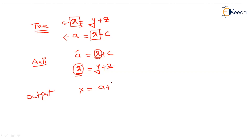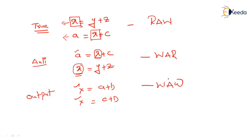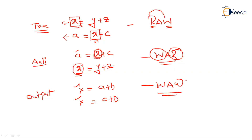For output dependence, consider: X = A + B followed by X = C + D. Both instructions write to X. For RAW, X must be written first and then read. For WAR, the first instruction should read X before the second writes it. For WAW, the first instruction should write X before the second writes it. The order must be strictly sustained.